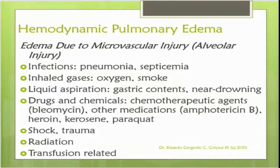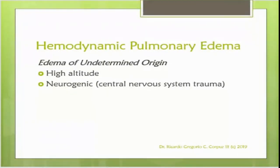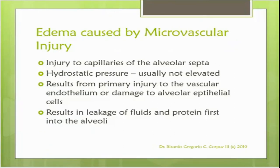Edema due to microvascular injury can be caused by alveolar injury from infections, pneumonia, septicemia, inhaled gases, smoke, liquid aspiration, gastric content, near drowning, drugs and chemicals, chemotherapeutic agents like bleomycin, amphotericin B, heroin, kerosene, paraquat, shock, trauma, radiation, and transfusion-related reactions. Near drowning means the person was in the water and swallowed water but survived. Edema of uncertain origin includes high-altitude edema and neurogenic edema from central nervous system trauma, such as in those undergoing general anesthesia.